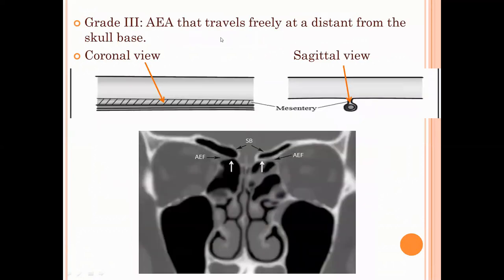In Grade 3, the anterior ethmoidal artery travels freely at a distance from the skull base area, remaining like a mesentery within the ethmoidal cells, as shown in the coronal cut and sagittal diagram. In this Grade 3 configuration, the anterior ethmoidal artery is most vulnerable to injury during endoscopic sinus surgery.